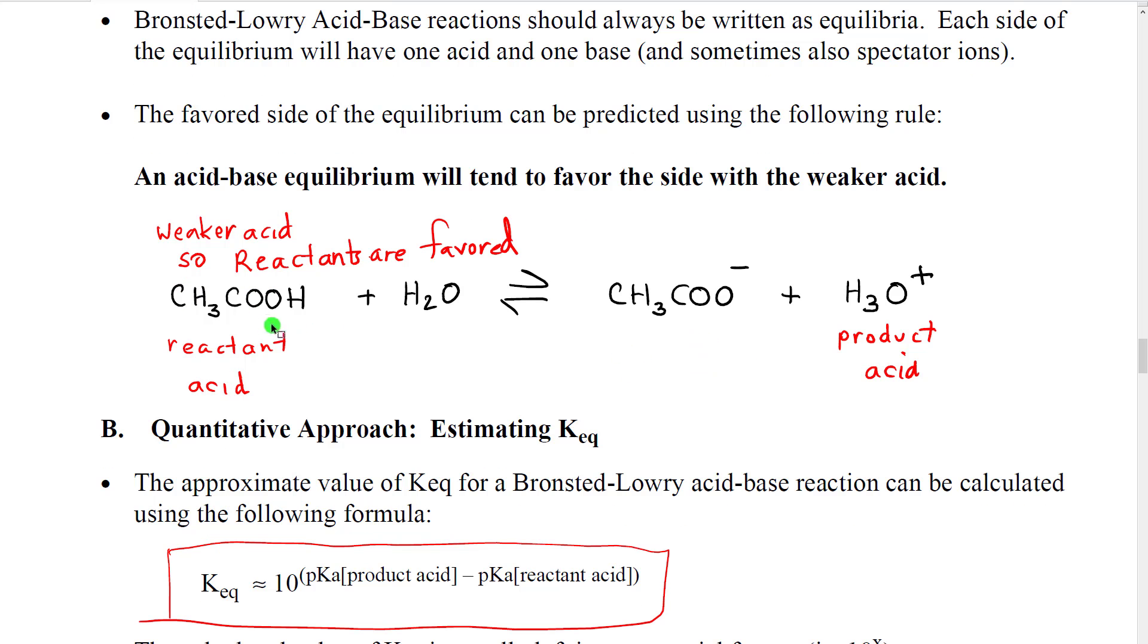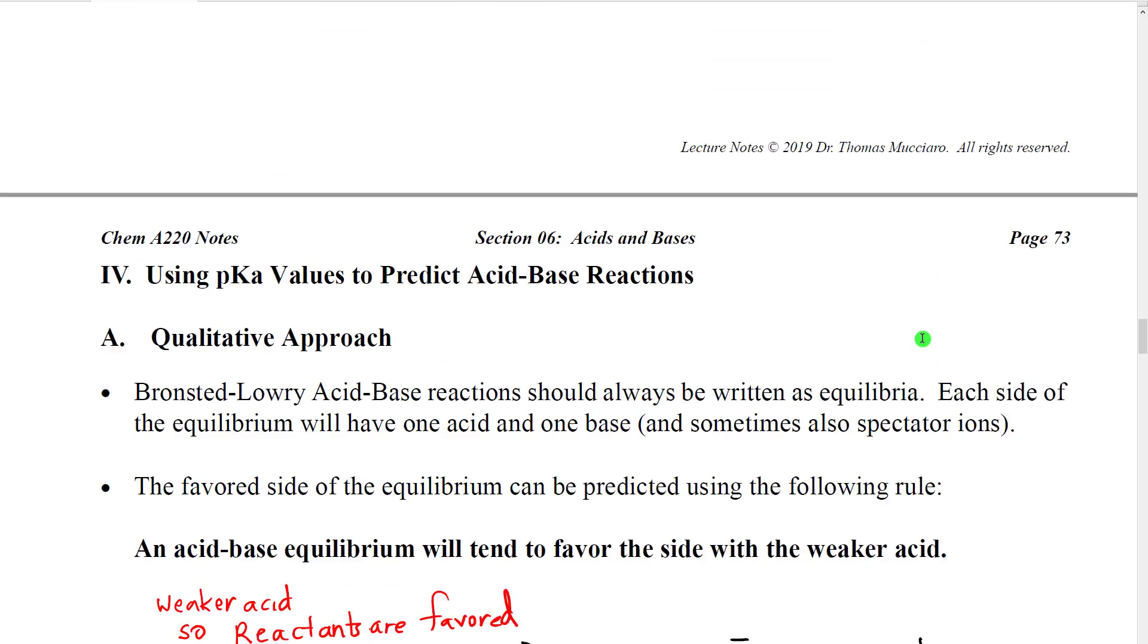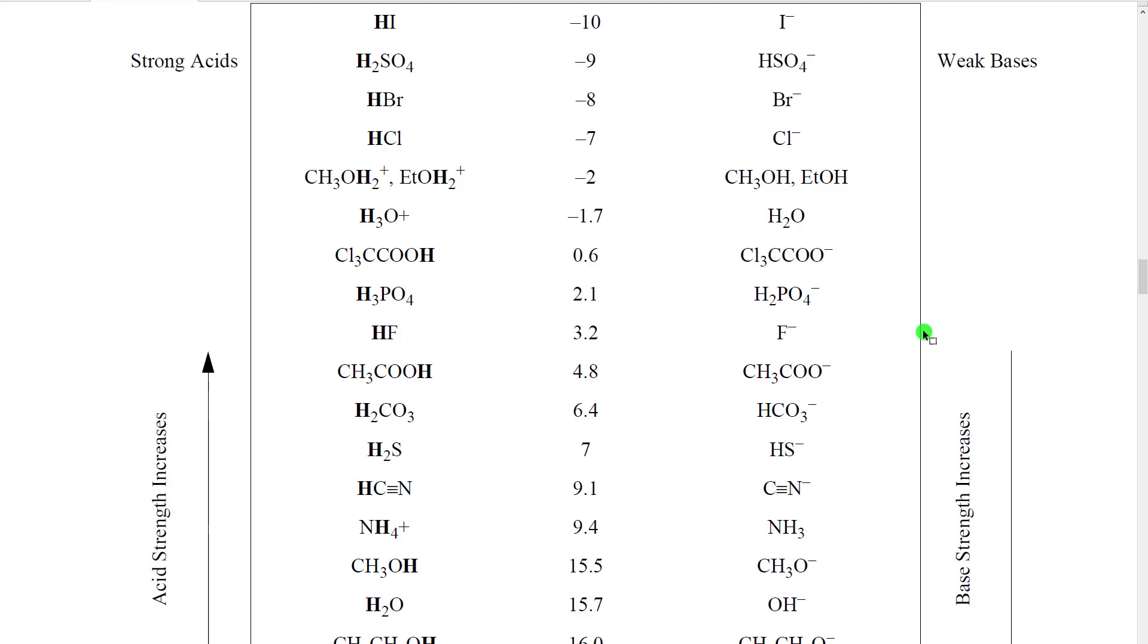So, what we're then going to do is compare the acid strength of the two acids, the product acid and the reactant acid, by looking them up on the pKa table. So, just remember, our reactant acid is CH3COOH, acetic acid, and our product acid is hydronium ion. Now, if we look on the table, we can see that hydronium ion is right here, and it has a pKa of minus 1.7. Acetic acid is right here, and it has a pKa of 4.8.